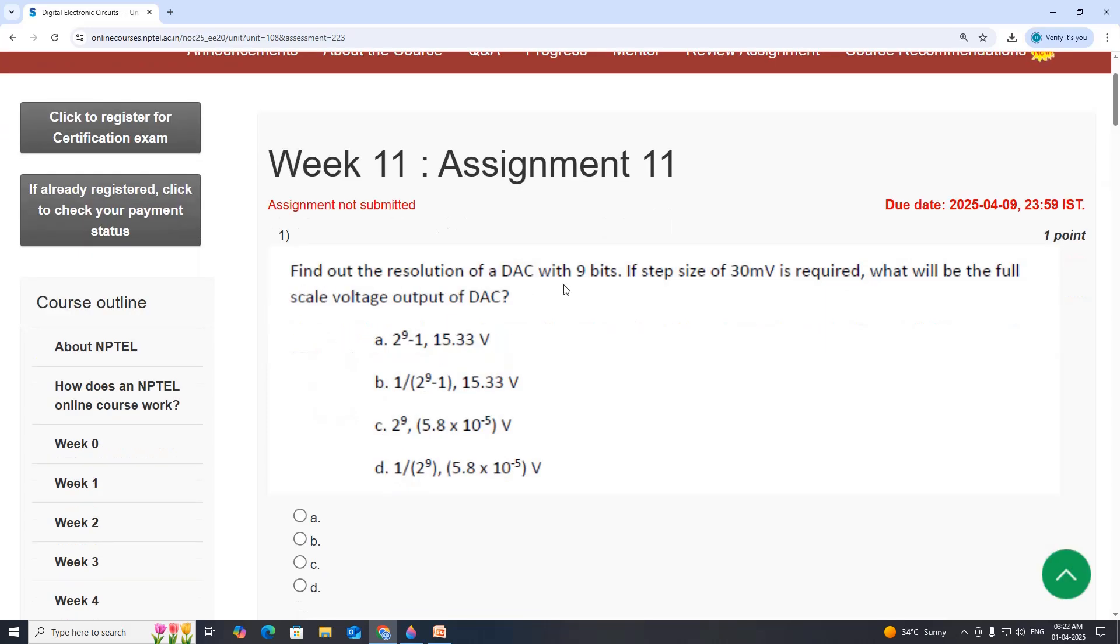First question: find out the resolution of a DAC with 9 bits. If the step size of 30mV is required, what will be the full scale output voltage of DAC?